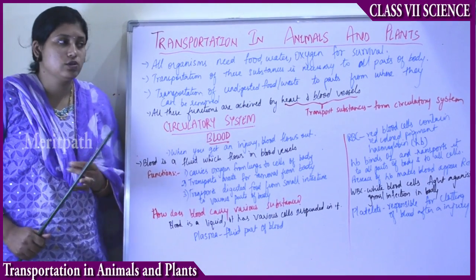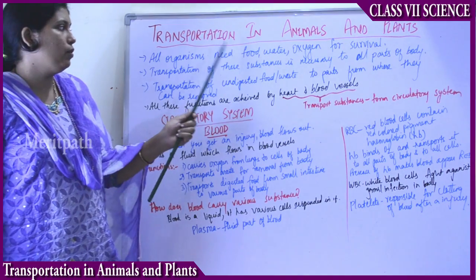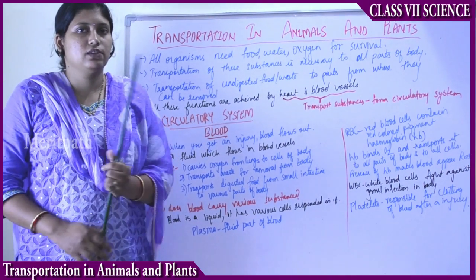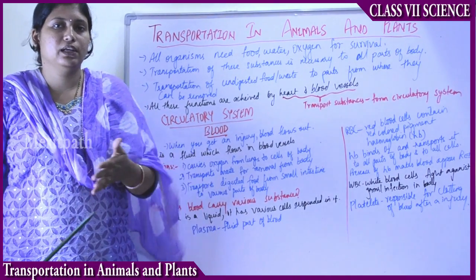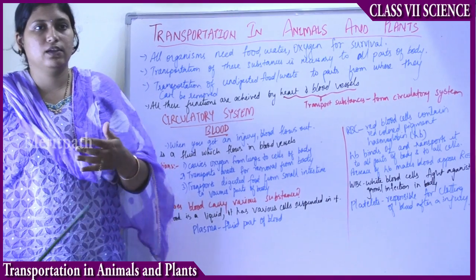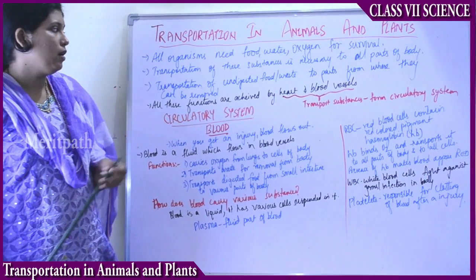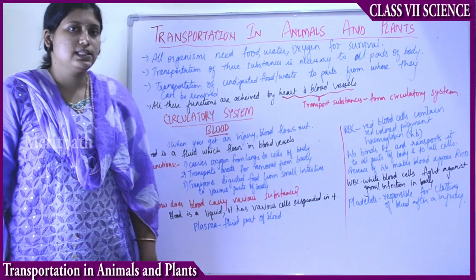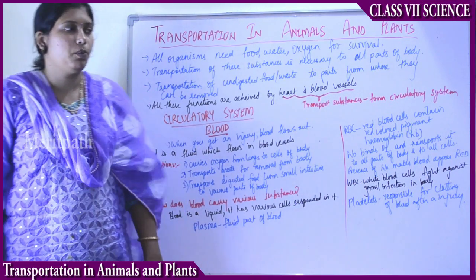All organisms require food, water and oxygen for survival. To live day to day life, to survive we eat food, water and oxygen. But how do these substances get transported to all parts of the body?